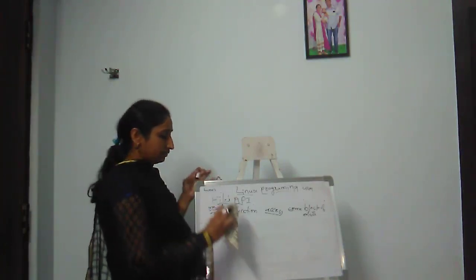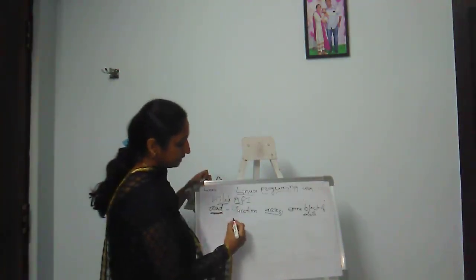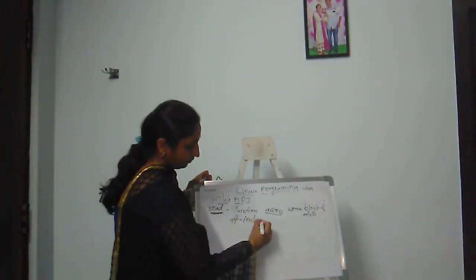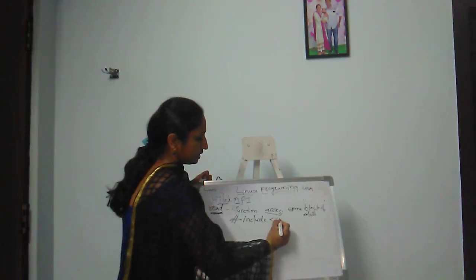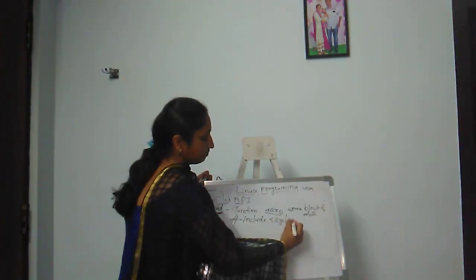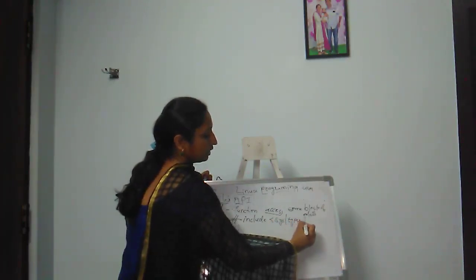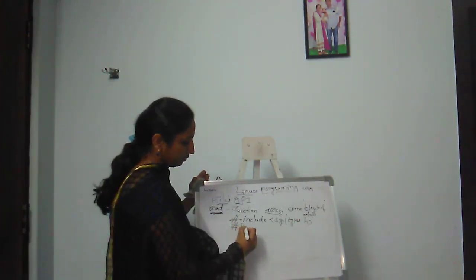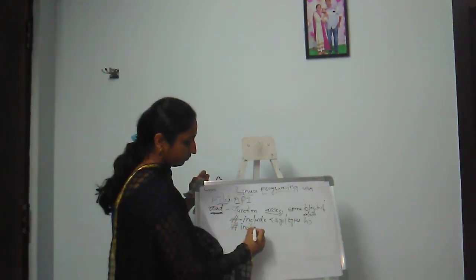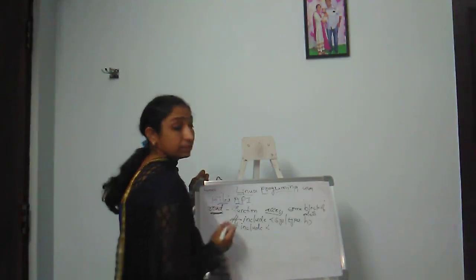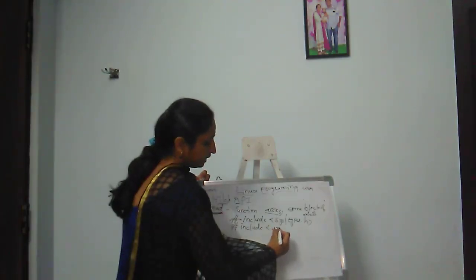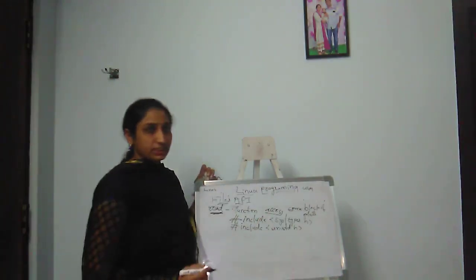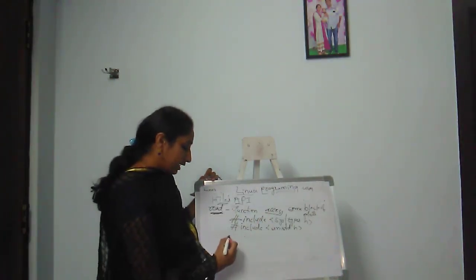For the read system call, we write: hash include sys/types.h and hash include unistd.h.